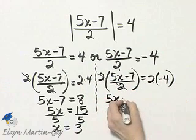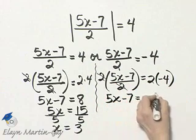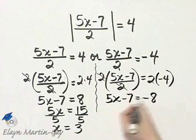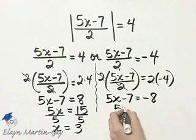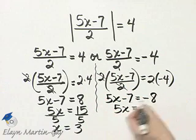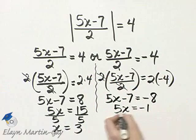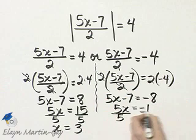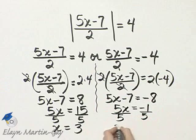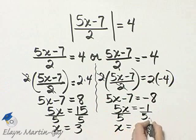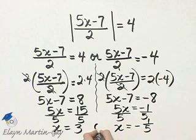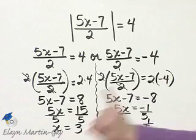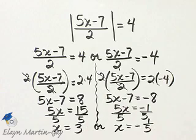I have 5x minus 7 is equal to negative 8. If we add 7 to both sides, I'll have 5x is equal to negative 8 plus 7 or negative 1. And then finish by dividing both sides by the coefficient of x, which is 5. And we'll have that x is negative 1 fifth. There is our other solution. I'll let you check. But I have solutions of 3 and also negative 1 fifth.